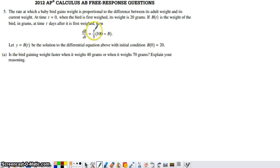So here's the constant of proportionality. And then here's the difference between its adult weight, 100 grams, and its current weight given by B.